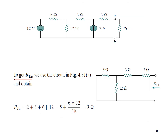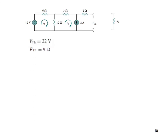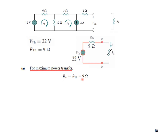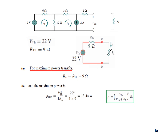To find R_Thevenin, we set sources to zero: short-circuit the voltage source and open-circuit the current source. The remaining resistors give R_Thevenin = 2 + (3 + 6 ∥ 12) = 9 ohms. For maximum power transfer, R_L = R_Thevenin = 9 ohms. The maximum power is P_max = V_Thevenin² / (4 × R_L) = 22² / (4 × 9) = 13.44 watts.